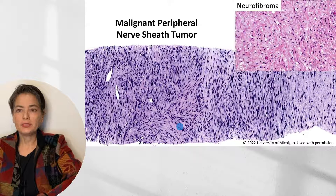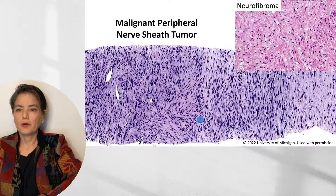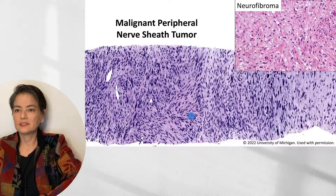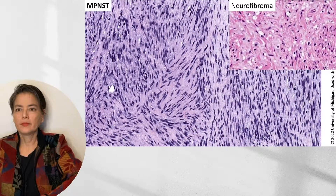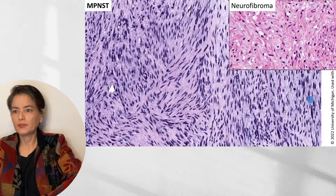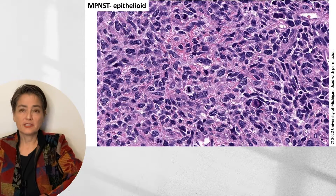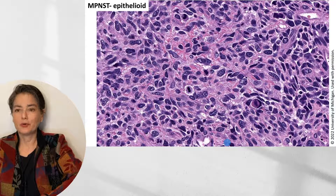Here is a core needle biopsy of an MPNST compared to a neurofibroma. There are significant differences: the MPNST has a very prominent fascicular architecture with cells aligned in parallel rows, is more densely cellular, and shows pleomorphism with enlarged hyperchromatic cells. Compare that to the less cellular, haphazardly arranged neurofibroma. At higher magnification we can appreciate the pleomorphism and hyperchromasia, with likely mitotic figures. An epithelioid MPNST looks very different, with mitotic figures visible — a case where immunohistochemistry would be a very useful adjunct.